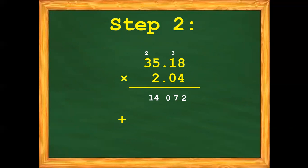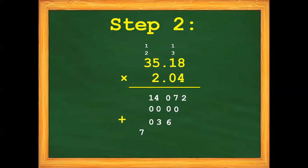Next, 0 times 8 is 0, 0 times 5 is 0, 0 times 3 is 0. Then 2 times 8 is 16, bring down 6, carry 1. 2 times 1 plus 1 is 3. 2 times 5 is 10, bring down 0, carry 1. 2 times 3 is 6 plus 1 is 7.